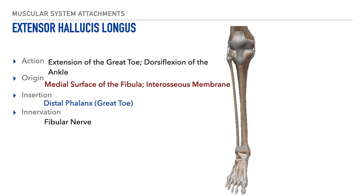The next muscle is called the extensor hallucis longus. The name tells us its action is extension, 'hallucis' tells us it attaches to the great toe, and it is relatively long. The action is extension of the great toe and dorsiflexion of the ankle. Its origin is on the anterior surface of the fibula and the interosseous membrane between the tibia and fibula. Its insertion is on the dorsal aspect of the distal phalanx of the great toe, and its innervation is from the fibular nerve.